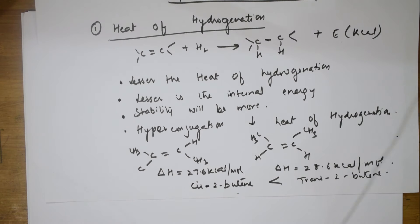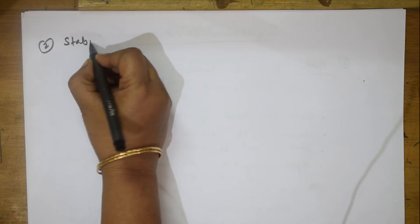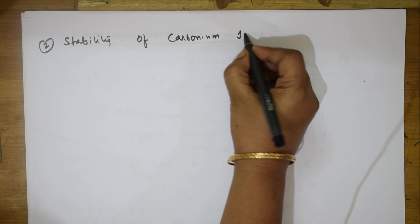Now let me take one more example. I am going to apply the concept of hyperconjugation to the stability of carbonium ions — the second application. Greater the number of hydrogen atoms present on the alpha carbon atom, that is the carbon immediately adjacent to the unsaturation, more is the number of resonating structures possible due to hyperconjugation, and hence greater the stability.